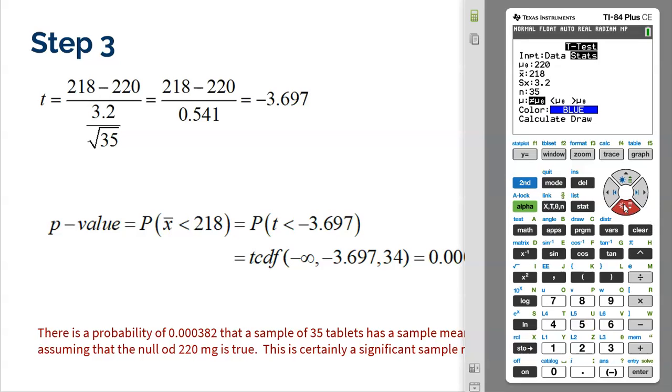Now we have to choose the alternative hypothesis. Do we believe the null or do we believe the population mean to be not equal to, less than, or greater than? And I'm pretty sure the question was pretty obvious that we were concerned that it was less than the 220 from the null hypothesis.